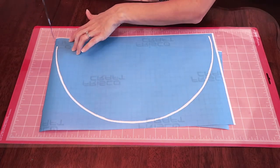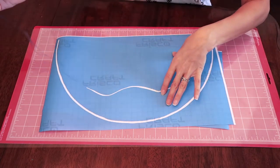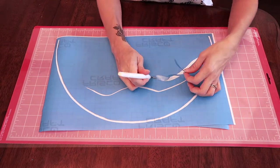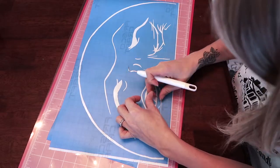Now onto weeding our design. You're going to take out the design and leave the negative space because we're going to be painting the design onto our wood round.